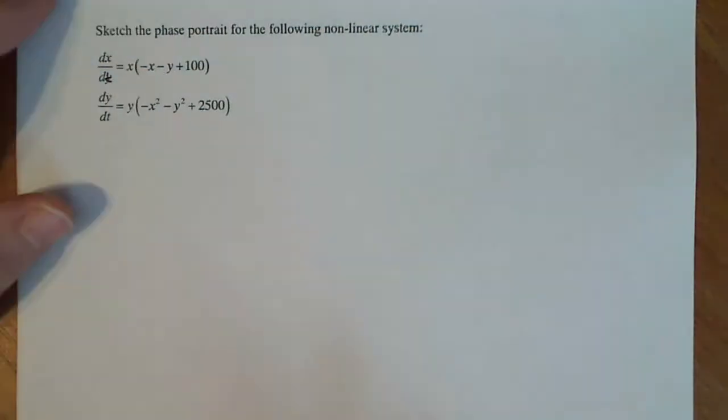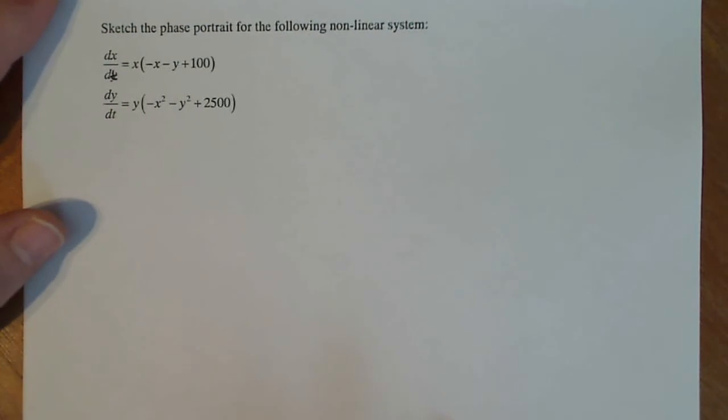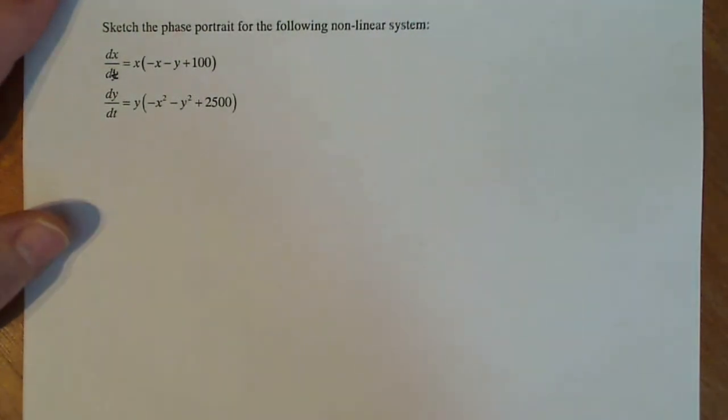So the Jacobian matrix is the matrix that allows us to zoom in at equilibrium points in a nonlinear system and look at them in a linear way. It's kind of like linear approximation using the tangent line in calculus one or a tangent plane in calculus three, depending on which classes you take.